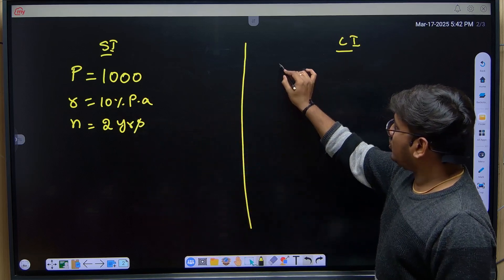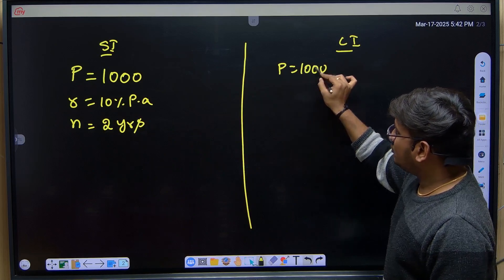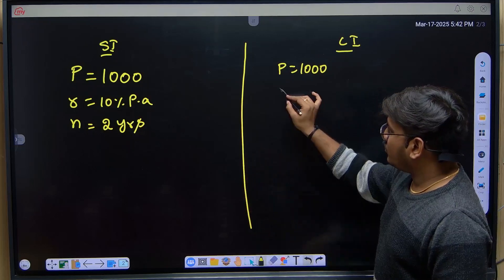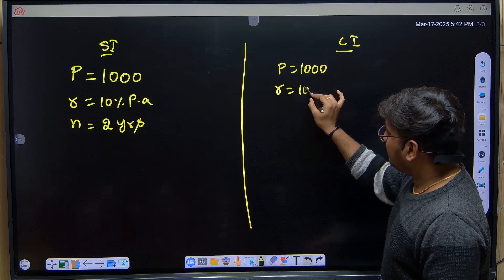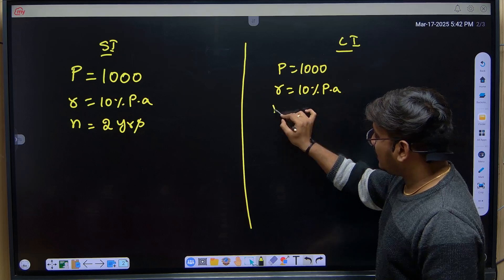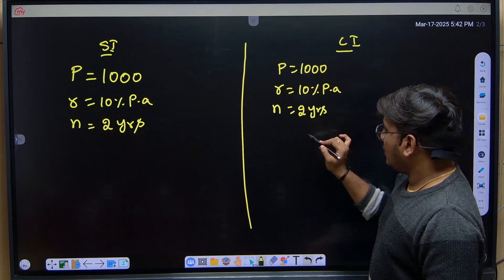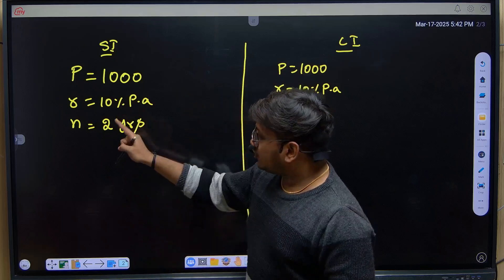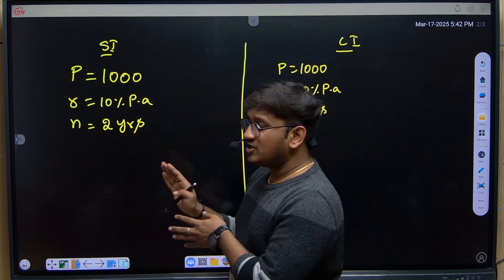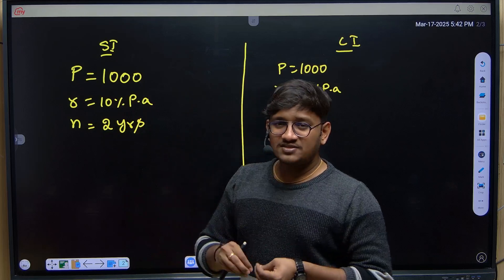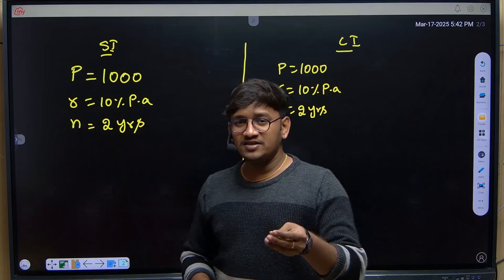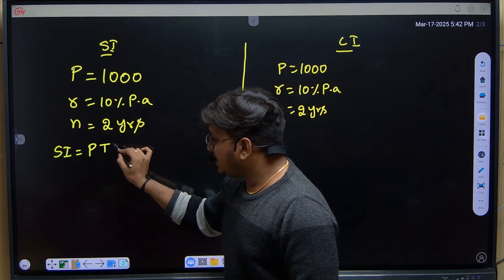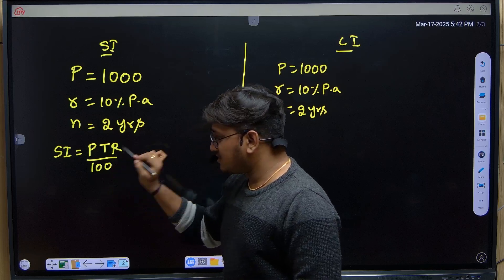I am taking principal amount as ₹1000, rate of interest as 10% per annum, and time period as 2 years. The same values will be used for compound interest — principal is 1000, rate is 10% per annum, and number of years is 2. This makes it easy to understand the difference between simple interest and compound interest.